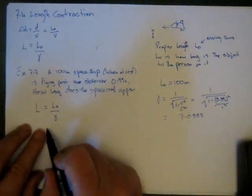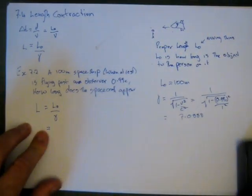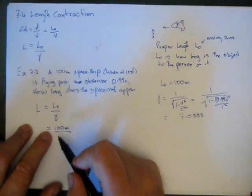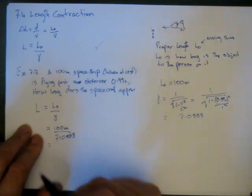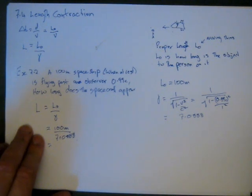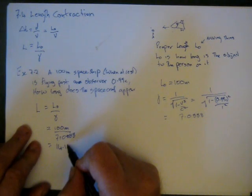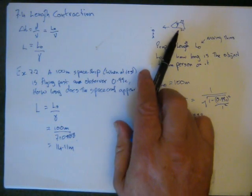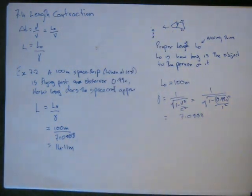So now we can stick this in here. The rest length of the moving object is 100 meters. Gamma is 7.0888. So we go 100 divided by gamma equals 14.11 meters. This person here sees the spacecraft as 14.11 meters long. This person on board sees it as 100 meters. Welcome to Special Relativity.